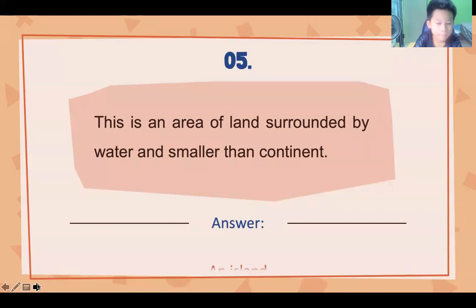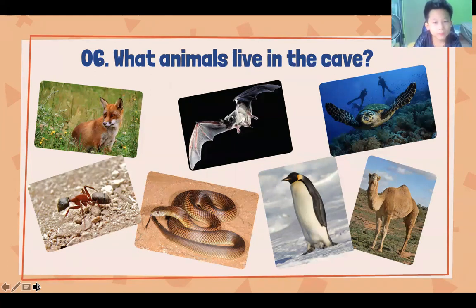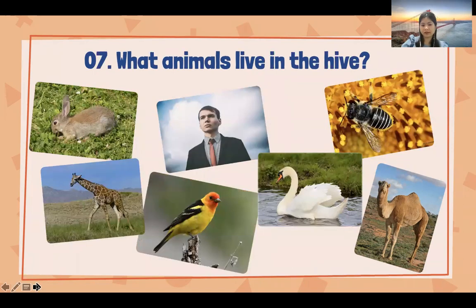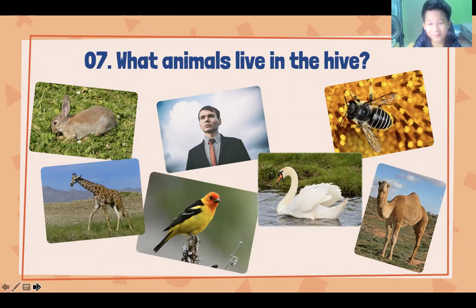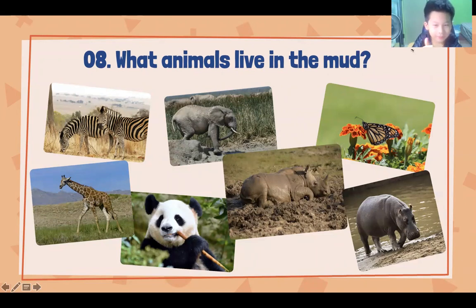Okay, now look at the picture and tell me the answer. Number six: what animal is in the tree? A bat. Number seven: what animal is in the field? A bee. Number eight: what animal is in the mud? A rhino. Elephant.